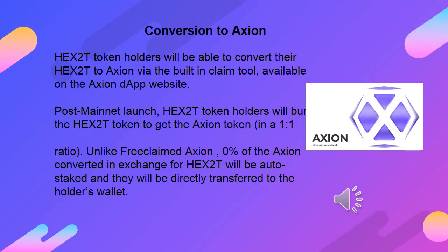Conversion to Axion: HEX 2T token holders will be able to convert their HEX 2T to Axion via the built-in claim tool available on the Axion DApp website. Post mainnet launch, HEX 2T token holders will burn the HEX 2T token to get the Axion token in a 1-to-1 ratio. Unlike free claimed Axion, 0% of the Axion converted in exchange for HEX 2T will be auto-staked — they will be directly transferred to the holder's wallet.